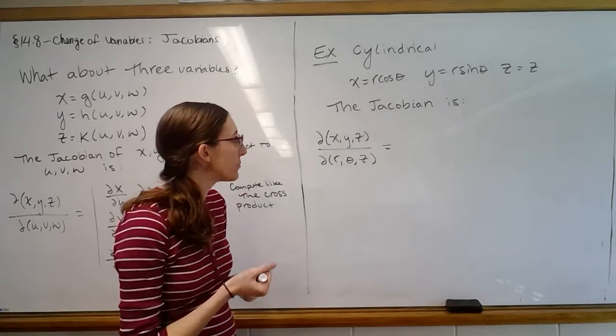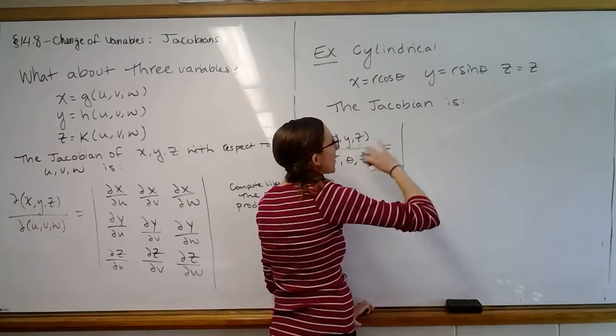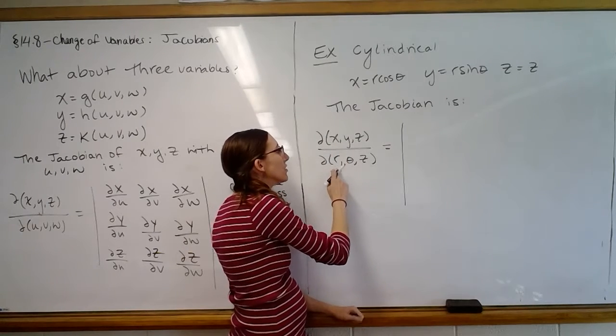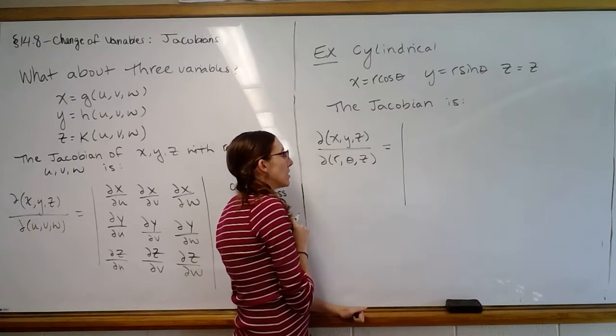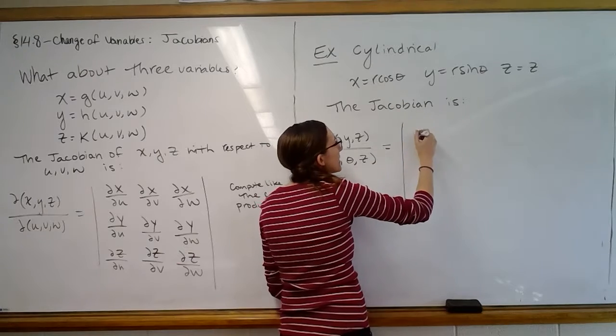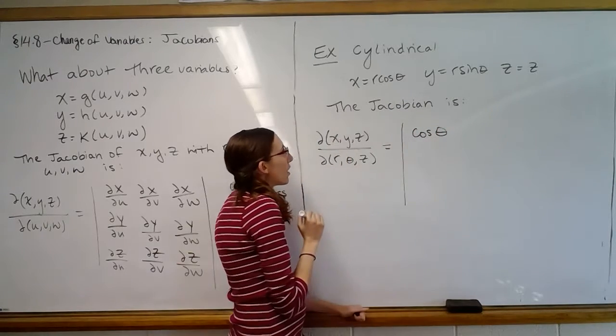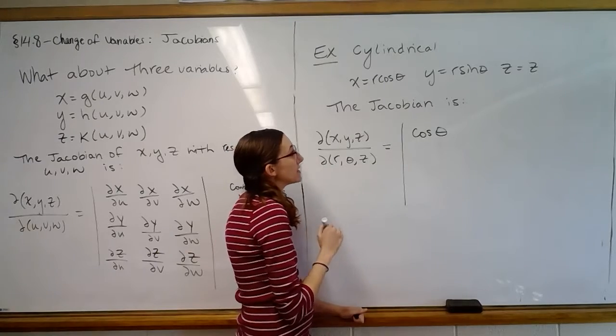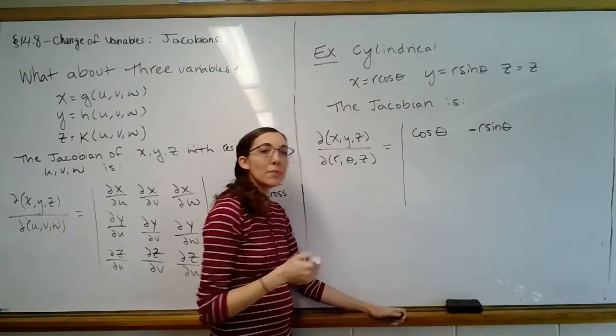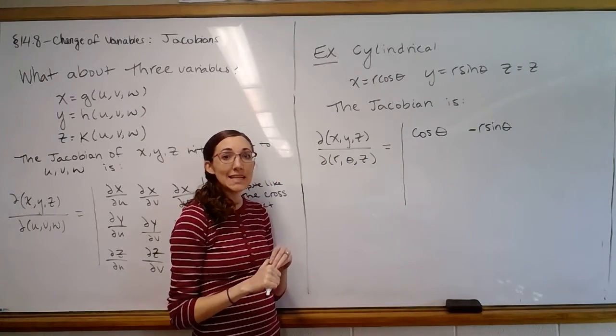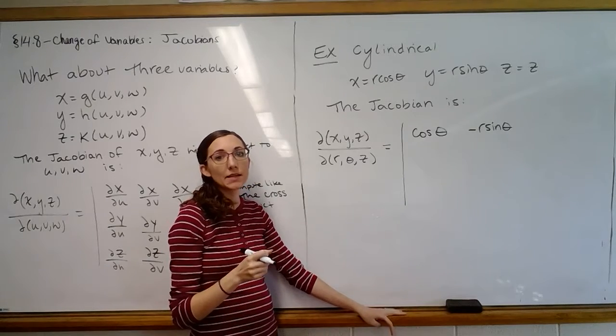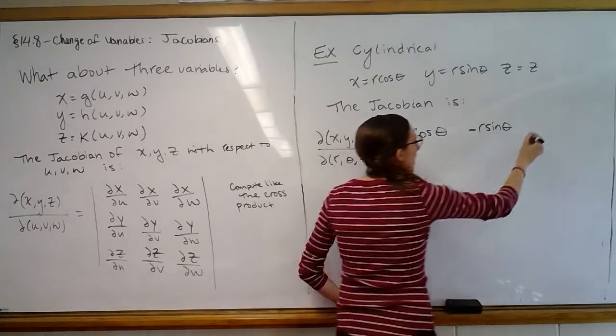And then we need to do all of our different partials. So when we do the Jacobian, we'll do the x's on the top, since that's our first variable. We'll first do it with respect to - in this case, we did the order r, theta, z. So the partial with respect to r of r cosine theta is cosine theta. The partial of r cosine theta with respect to theta is negative r sine theta. And then the partial of r cosine theta with respect to z is zero, because there is no z factor in there - it's just a constant. Remember, we're doing a derivative, so the derivative of a constant is zero.